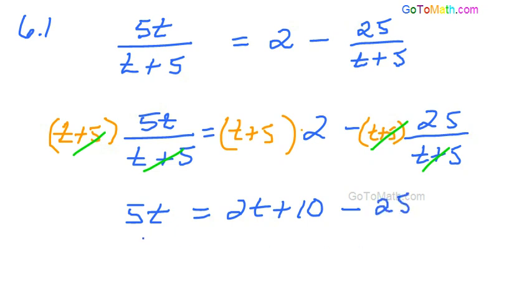Alright, so we've got 5t plus 2t plus 10 minus 25. Now, let's collect up our like terms. And we're going to take that 2t over to the left. So we end up with 5t minus 2t is equal to 10 minus 25.